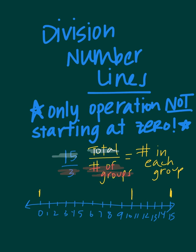Here's one group: one, two, three, four, five — with arrows going towards zero. Then the second group: one, two, three, four, five. And the third group: one, two, three, four, five.